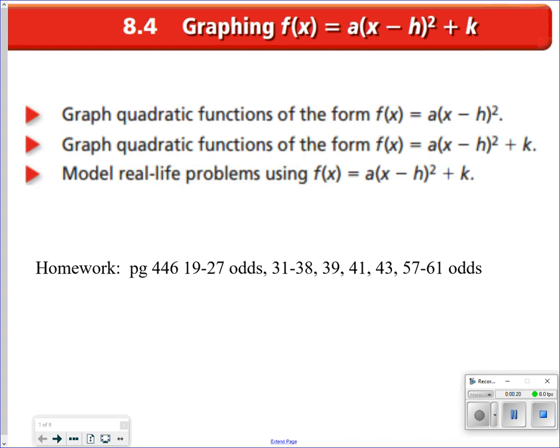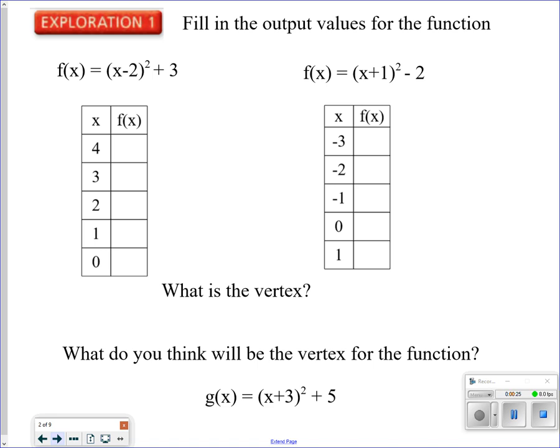We were doing vertex form before, but you really kind of didn't know it. A little exploration here — we're going to fill in the chart by plugging in numbers. If I plug in 4 for x, I get 7, because 4 minus 2 is 2, squared is 4, plus 3 is 7. Plug in 3, get 4. Plug in 2, get 3. Plug in 1, get 4 — because 1 minus 2 is negative 1, squared is positive 1, plus 3 is 4. And 0 gives you 7.